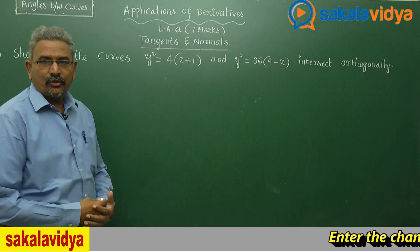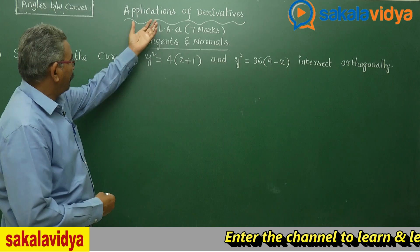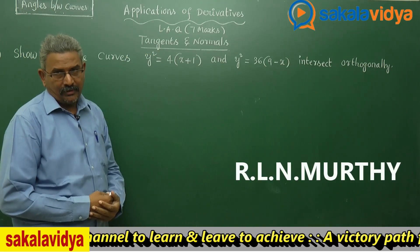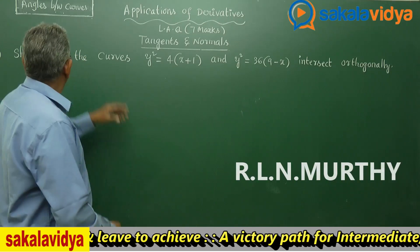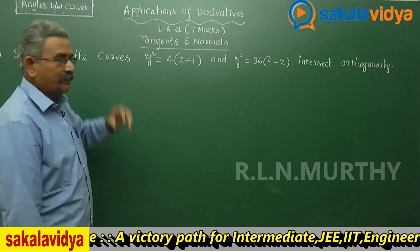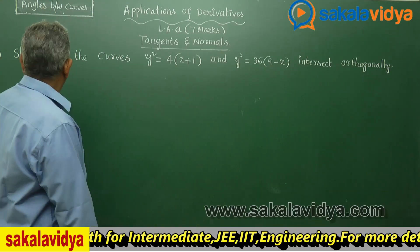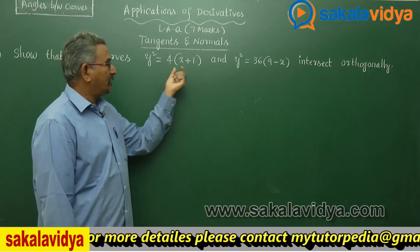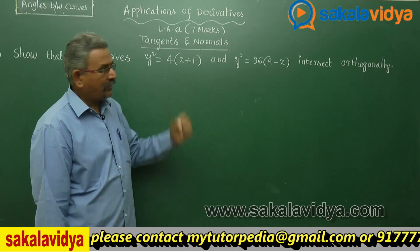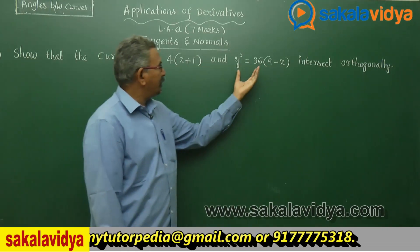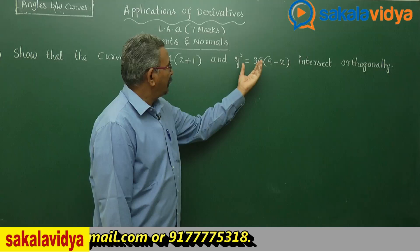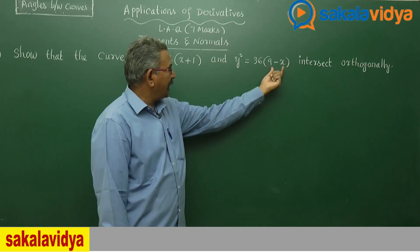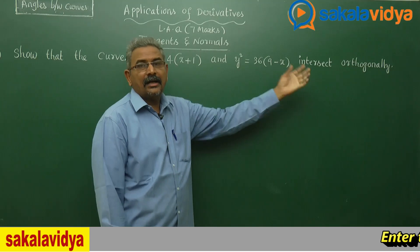Let us solve one more problem on applications of derivatives from the tangents and normals chapter. The concept here is the angle between curves. The question is: show that the curves y² = 4(x+1) and y² = 36(9−x) intersect orthogonally.